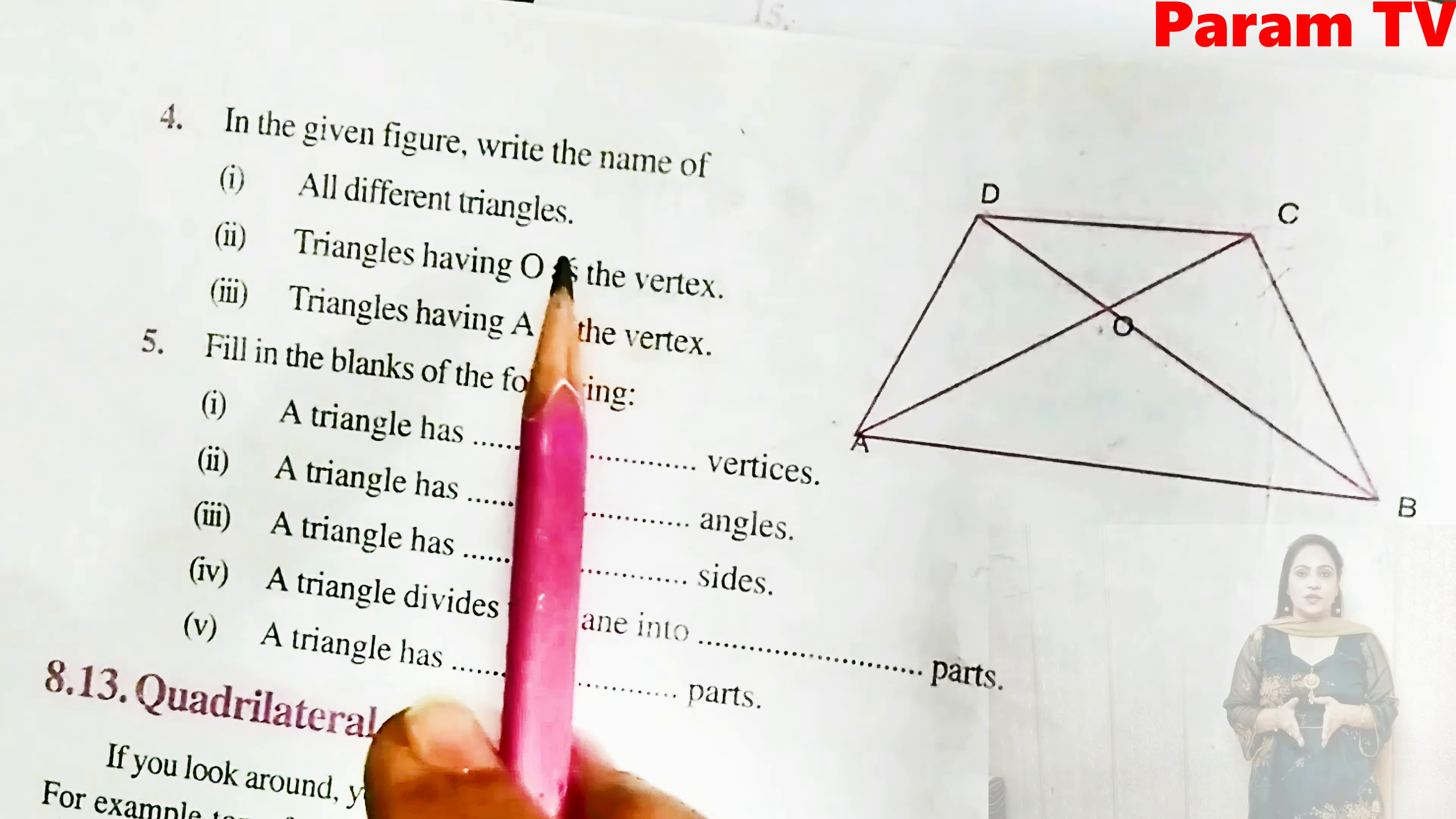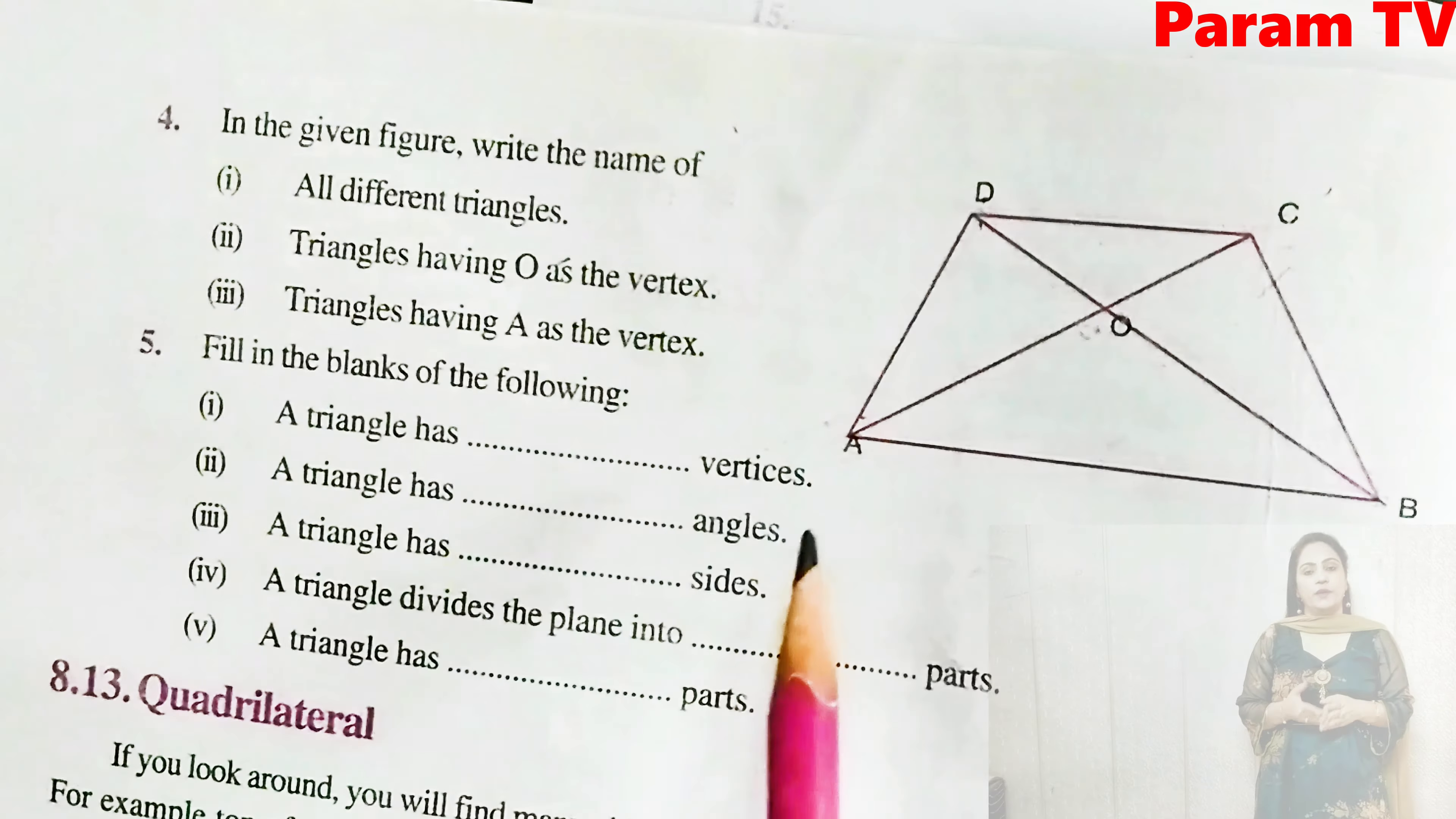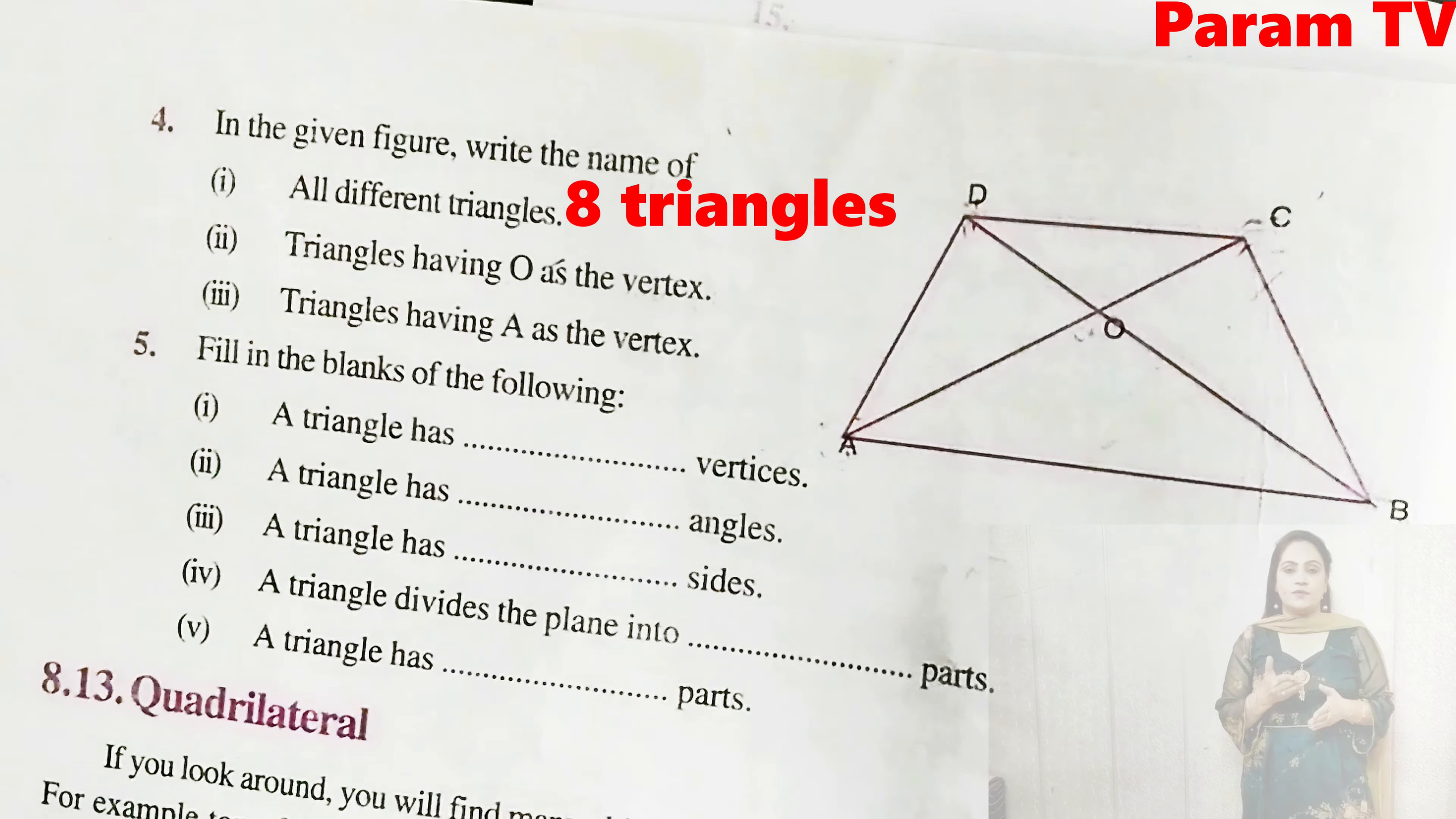So all the different triangles. Which triangles do you see? Four are directly visible. AOD triangle, BOC, and COD. And after that ABC, ABD, DCA, and DCB. Here are eight triangles you can see.